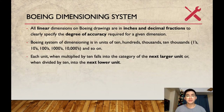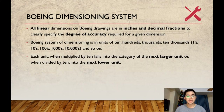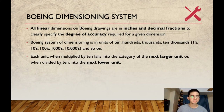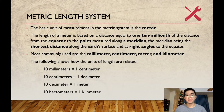Linear dimensions of Boeing drawings are in inches and decimal fractions, to clearly specify the degree of accuracy required for a given dimension. Boeing's system of dimensioning is in units of 10, hundreds, thousands, ten-thousands, and so on. Each unit, when multiplied by 10, falls into the category of the next larger unit, or when divided by 10, into the next lower unit. The basic unit of measurement in the metric system is the meter. The length of the meter is based on a distance equal to one ten-millionth of the distance from the equator to the poles, measured along a meridian — the shortest distance along the Earth's surface at right angles to the equator.